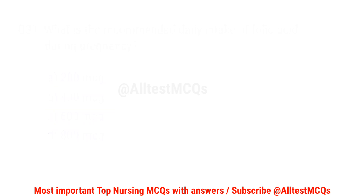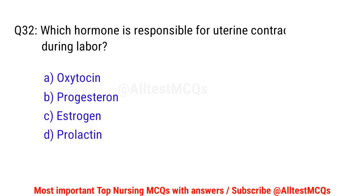Question number 32. Which hormone is responsible for uterine contractions during labor? The right option is A: Oxytocin.